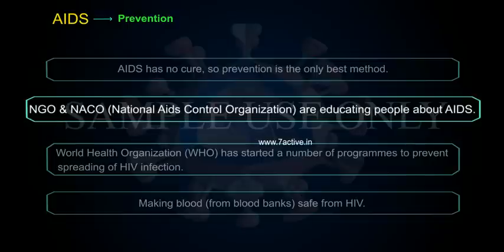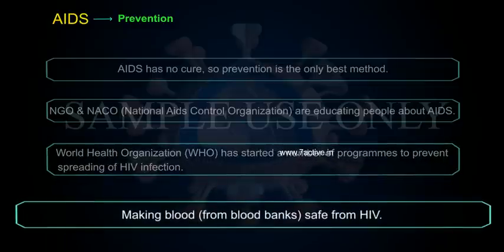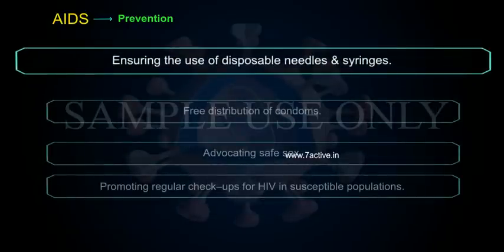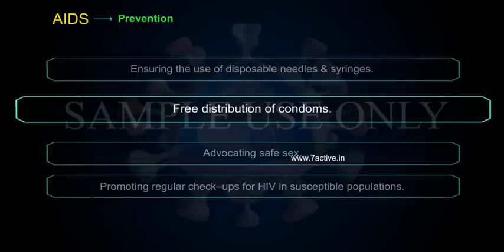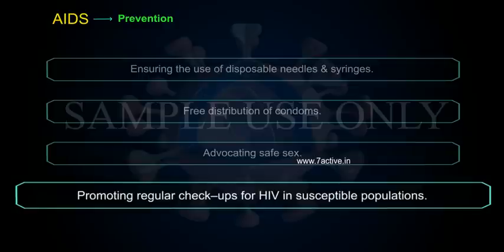NGOs and NACO — the National AIDS Control Organization — are educating people about AIDS. The World Health Organization has started a number of programs to prevent the spreading of HIV infection, including making blood from blood banks safe from HIV, ensuring the use of disposable needles and syringes, free distribution of condoms, advocating safe sex, and promoting regular check-ups for HIV in susceptible populations.